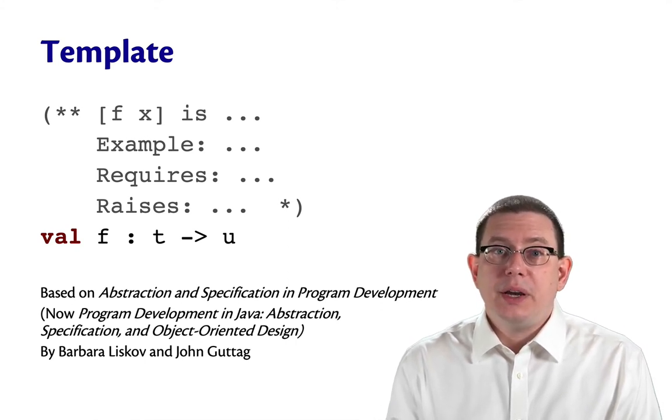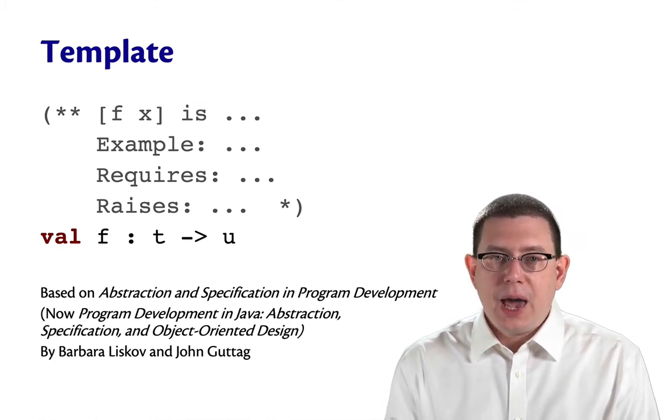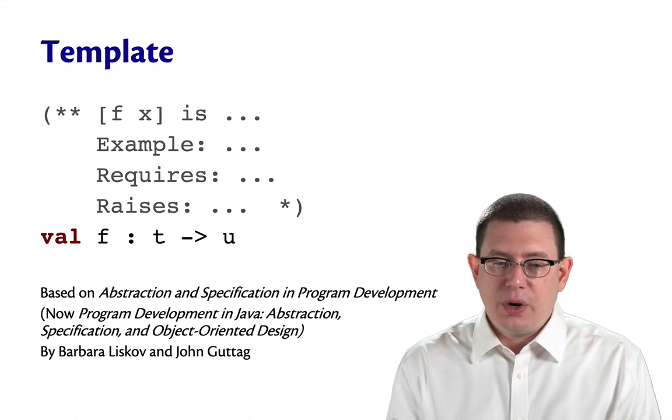They later rewrote that book and updated it for Java. The title of the rewritten book was Program Development in Java, Abstraction, Specification, and Object-Oriented Design.